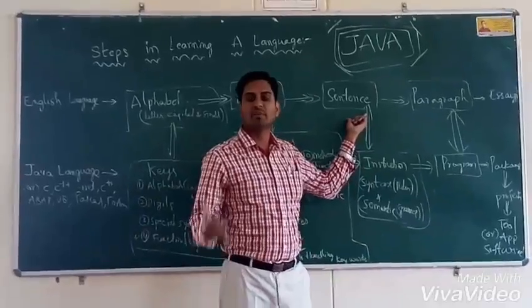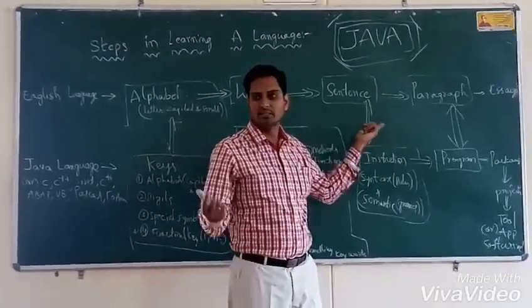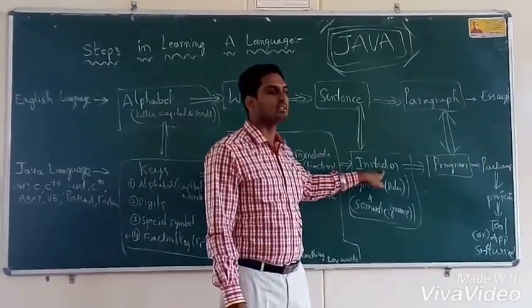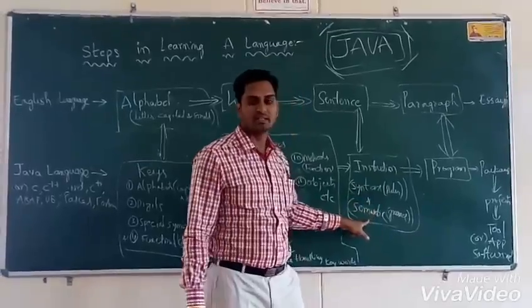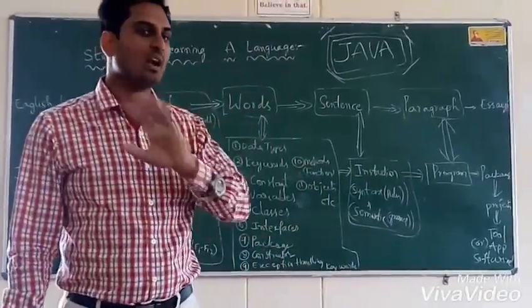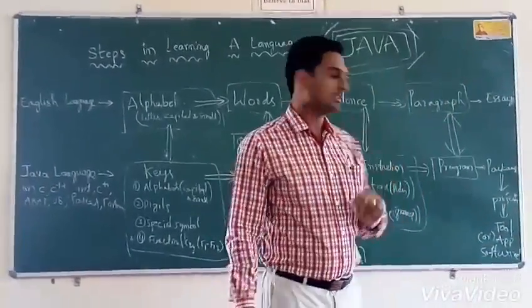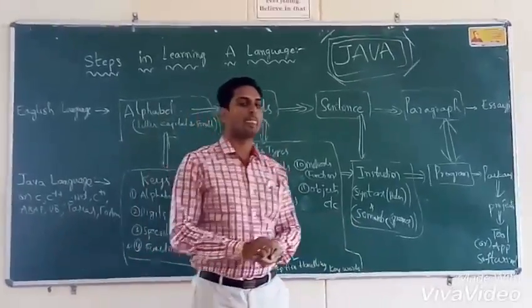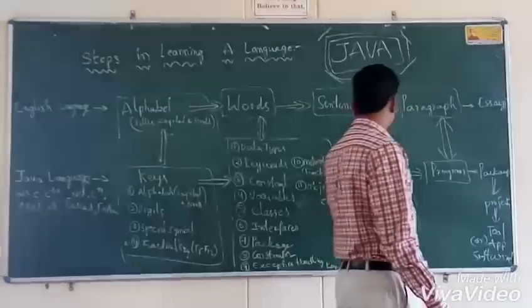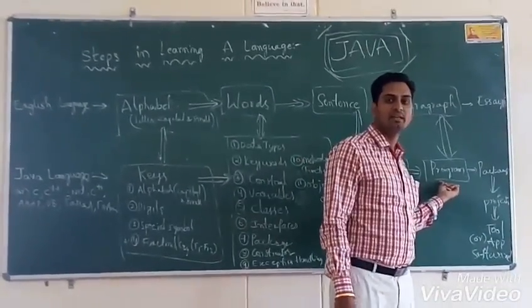Next, coming to sentences. In a language we need to frame a sentence with correct tenses and without grammatical mistakes; otherwise it will be a wrong sentence. Similarly in Java, we need instructions — nothing but syntax and semantics. Syntax means rules and principles for how to type a program; without that it will not execute and we won't get the output. Semantic means grammar — spelling mistakes and sentence mistakes should not be there.